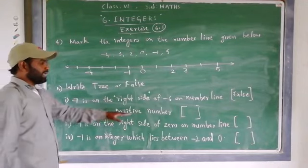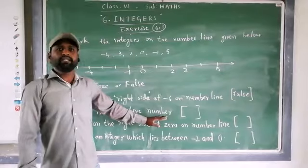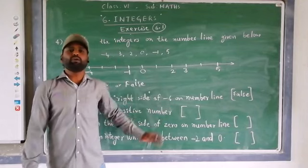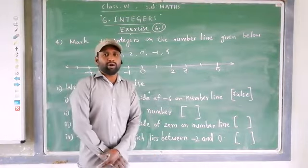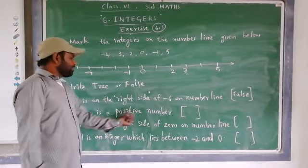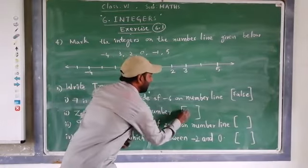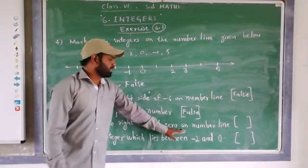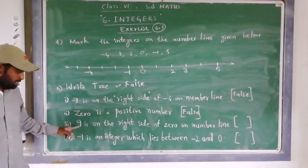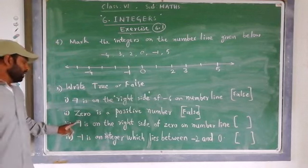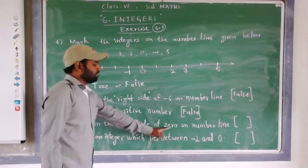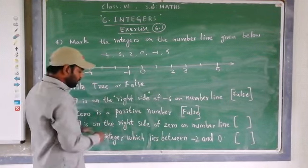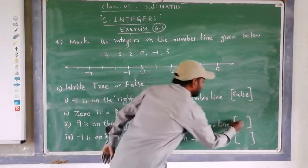Next statement: 0 is a positive number. As I told you earlier, 0 does not have any sign. It is not negative and it is not positive — it is neutral. So this statement is false. Next: 9 is on the right side of 0 on the number line. 9 has no sign, so it is a positive number. Positive numbers are on the right side of 0. So this statement is true.